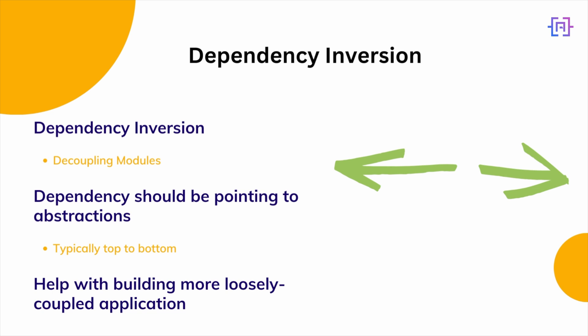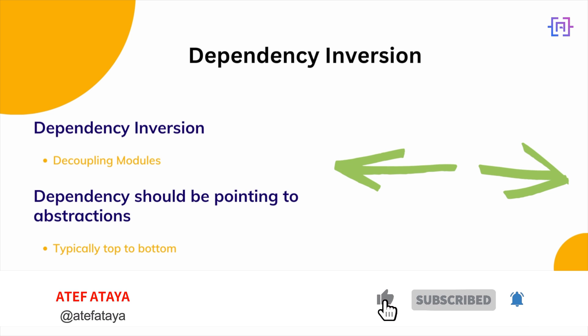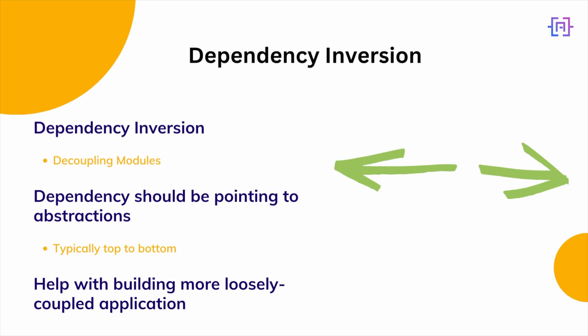Dependency inversion will help us with decoupling different modules within our application. Creating loose coupling is one of the key aspects of creating maintainable and easy-to-test software. To apply dependency inversion we are going to introduce abstraction, typically interfaces. Once we introduce abstraction to decouple the different components, we will get loosely coupled components.